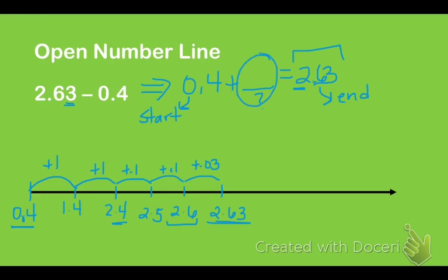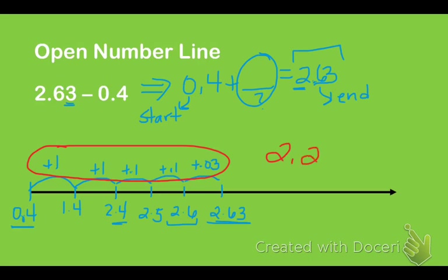How do I know what the answer is? You have to think about the jumps that you made. You made all of these jumps to get from 0.4 to 2.63. Now you have to add those jumps together to find your actual answer. So we're adding 1 plus 1, which is 2. Then 2 plus 0.1 is 2.1. Then 2.1 plus 0.1 is 2.2. And 2.2 plus 0.03 gives us 2.23. So 0.4 plus 2.23 is 2.63, or 2.63 minus 0.4 equals 2.23. That is how you use the open number line to subtract decimals.